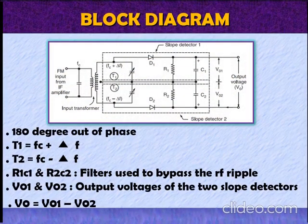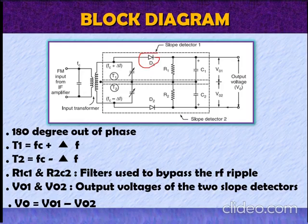This figure shows the block diagram of Balance Slope Detector. The circuit shows that the Balance Slope Detector consists of two slope detector circuits: slope detector 1 and slope detector 2. The input transformer has a center tap secondary, hence the input voltages to the two slope detectors are 180 degrees out of phase.